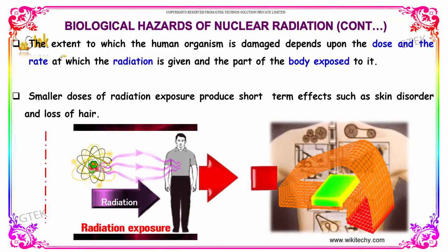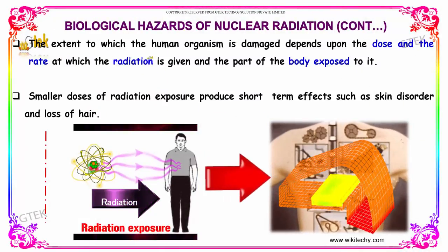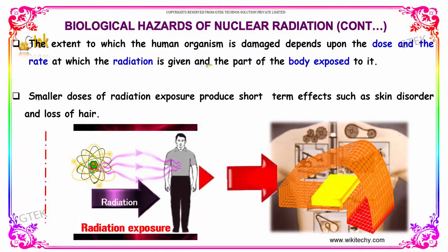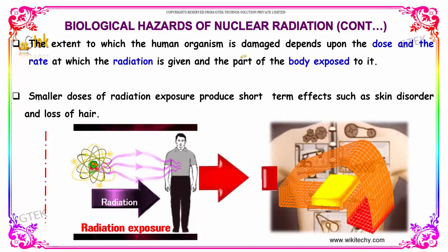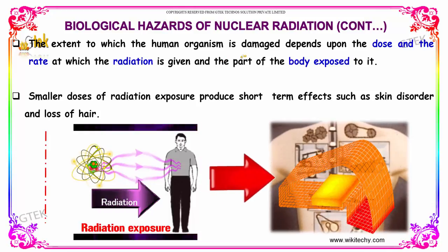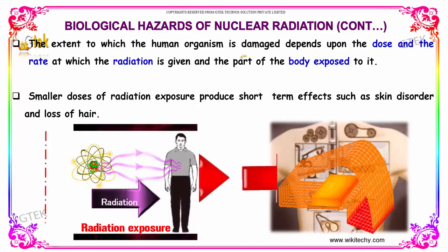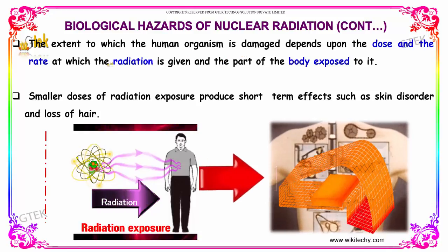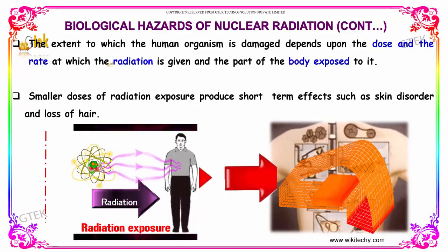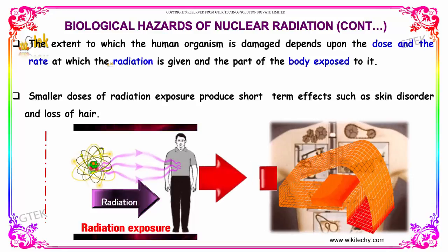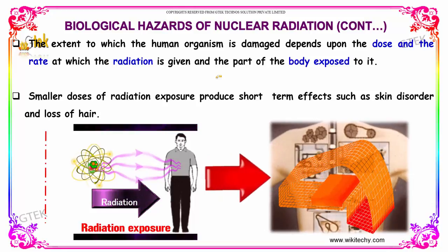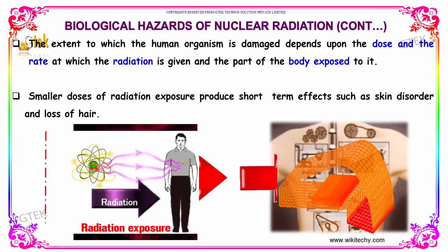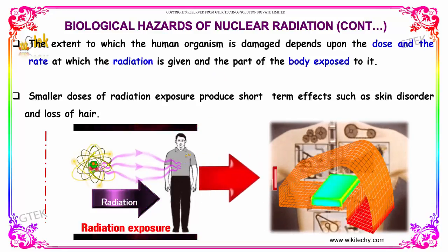The extent to which the human organism is damaged depends upon the dose and the rate at which the radiation is given, and the part of the body which is exposed to it.